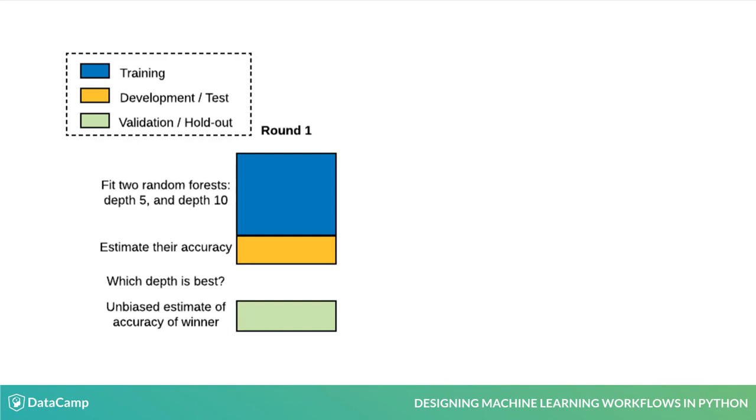You can also keep a separate holdout dataset in order to get a fresh final estimate of the accuracy of the winning classifier.